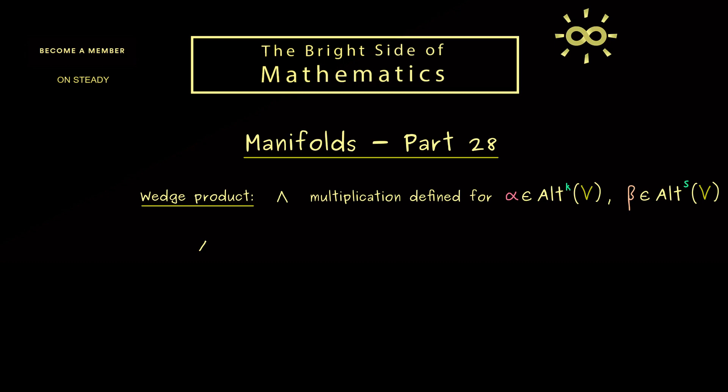Therefore, this multiplication now should be able to combine two different alternating forms, alpha and beta. This means we can see it as a map from the Cartesian product, so we have Alt^k(V) times Alt^s(V), and then it should map into the alternating k-forms again. However, now the outcome should be a k+s form. So this is what we want to have, and for a reason behind it, you can already think of integration. However, the explicit details for that will follow in future videos.